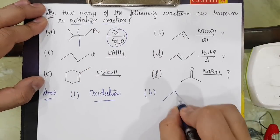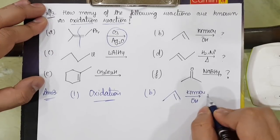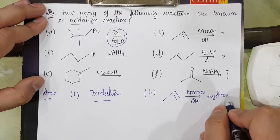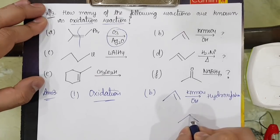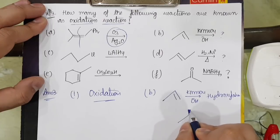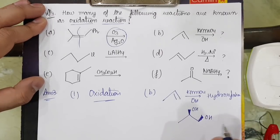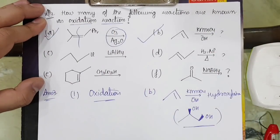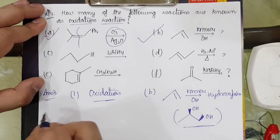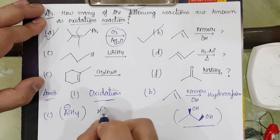In number B, what happens? In this case I will have KMnO4 OH minus which does hydroxylation. Hydroxylation means the two OH are introduced in the cis position. So we will have something like this, OH and OH. So this is oxidation. So this is also oxidation.